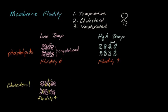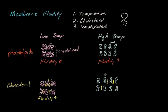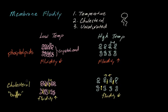What happens at high temperatures with cholesterol? At high temperatures, phospholipids are already pretty far apart. But just like before, cholesterol inserts itself into the membrane at random places, causing the phospholipids to pull closer together because they want to attach to that cholesterol. So now the molecules in the membrane are closer together, and fluidity actually decreases. Cholesterol is interesting because at low temperatures fluidity increases, and at high temperatures fluidity decreases — you can think of cholesterol like a buffer that keeps the cell membrane at a fairly stable level of fluidity.